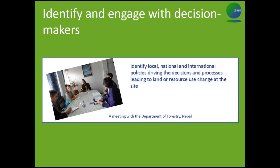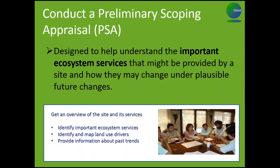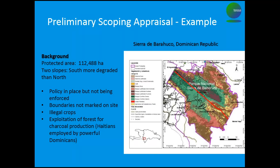Step one of TESA is a preliminary scoping appraisal, following a step-by-step format of background information gathering from a wide group of stakeholders. It's designed to understand which are the important ecosystem services from a site — both from a scientific perspective and from local stakeholders identifying what they feel is valuable — and then to think about how those ecosystem services might change, so what are the threats around the site, what particular development is happening, or what change is going on at the moment.